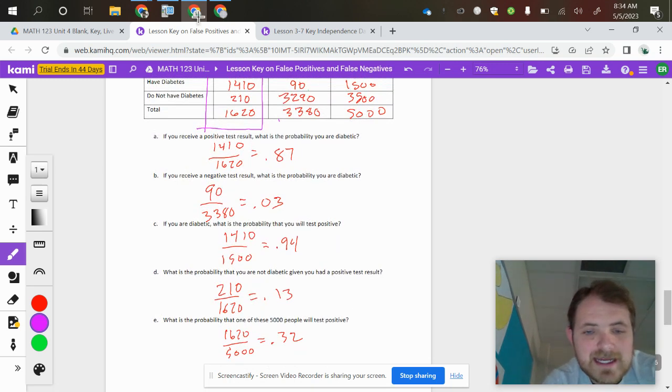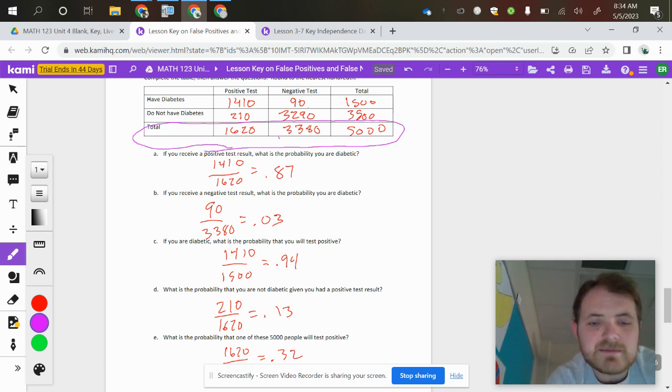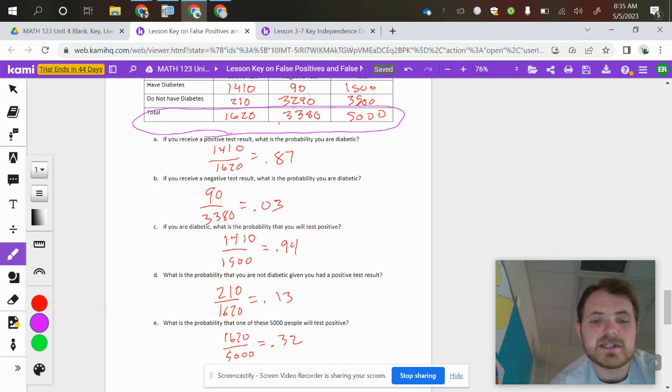What is the probability that one of these 5,000 people will test positive? So again, of the total 5,000, 3,380 are testing negative, 1,620 are testing positive. So you would do 1,620 divided by the 5,000 total, giving you a 32% chance that someone will test positive out of the entire group.